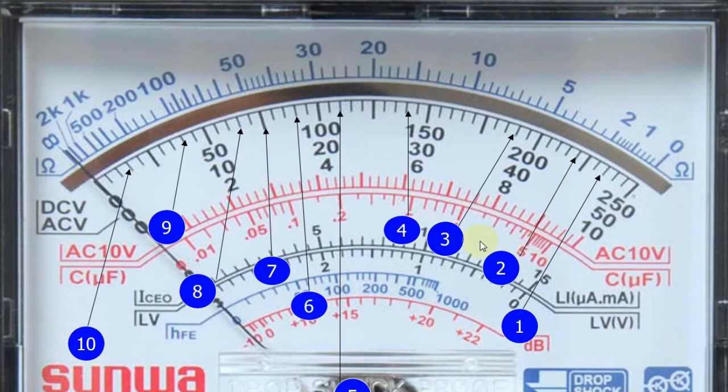Try natin yung number 3. DCV 2.5. Ito yung number 3. Ibig sabihin yan, magbabasa tayo dun sa 250 volts. Sa 250 volts, ang count natin sa bawat small scale is 5. Ngayon, yung pinakamalapit dyan is 150 or 175. So, sa 175, 180, 185, and we have 190.